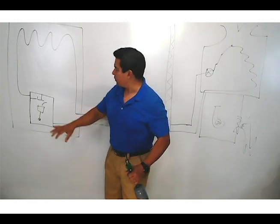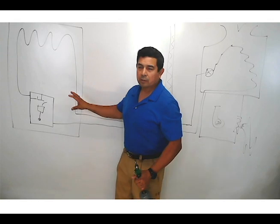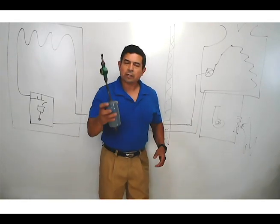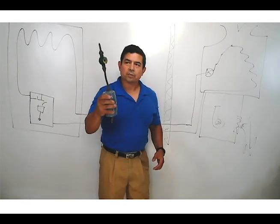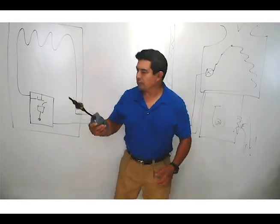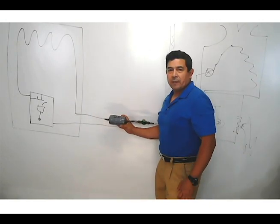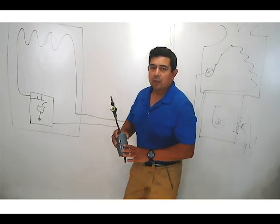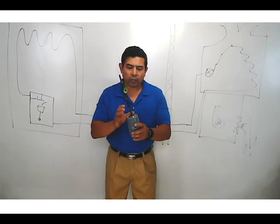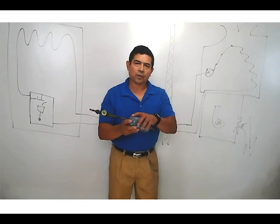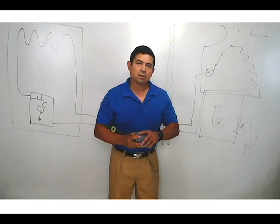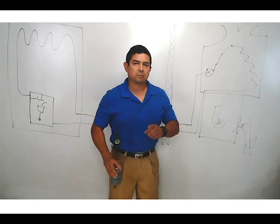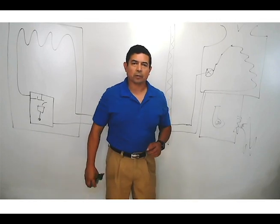We're going to start off with the major components, what the components do, and then we're going to get into the accessories — where these accessories may be found in the system, what they do, and what happens when something goes wrong with an accessory. How can that affect the system? How is that going to make your system not work properly?